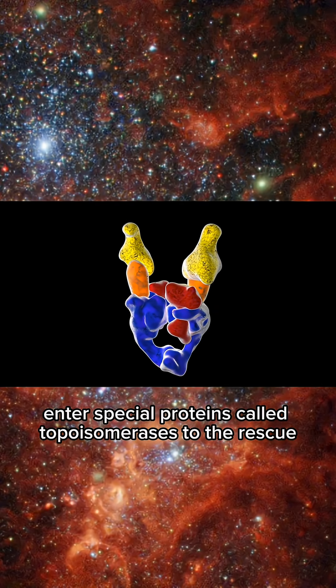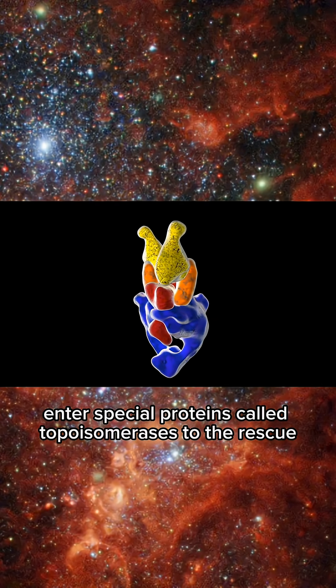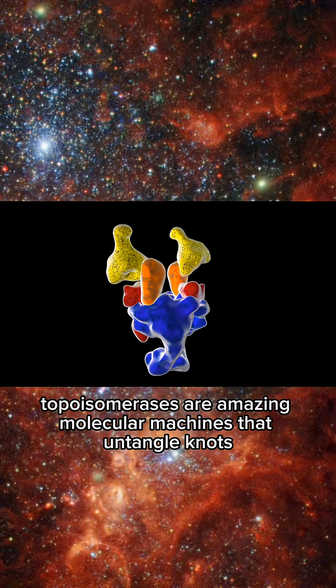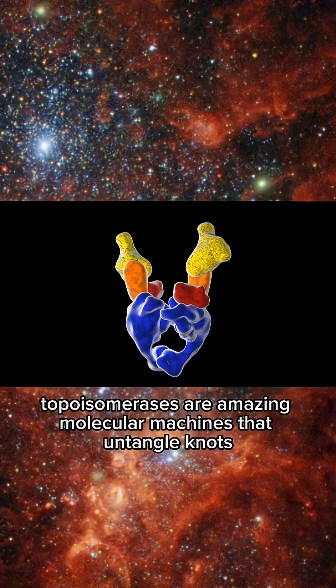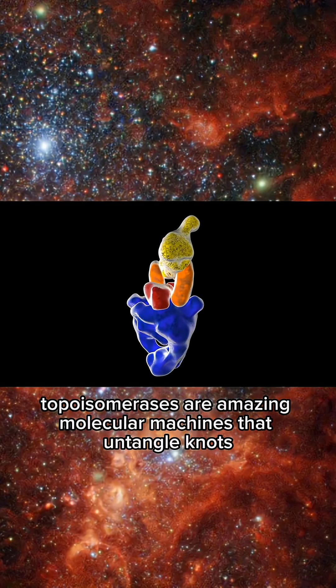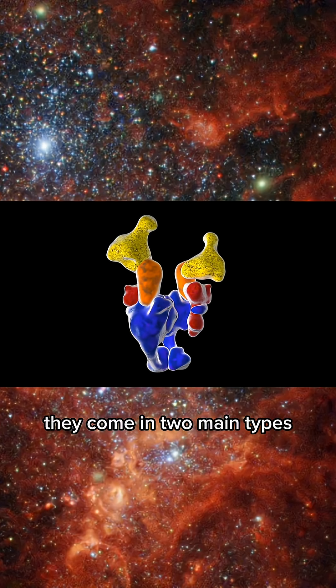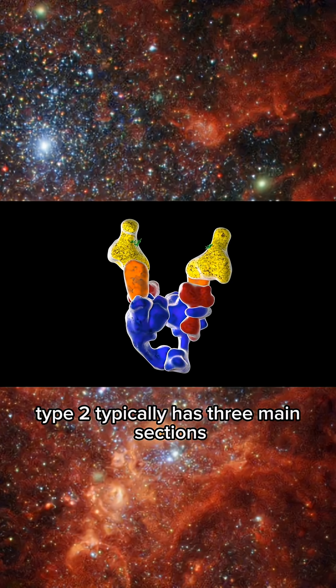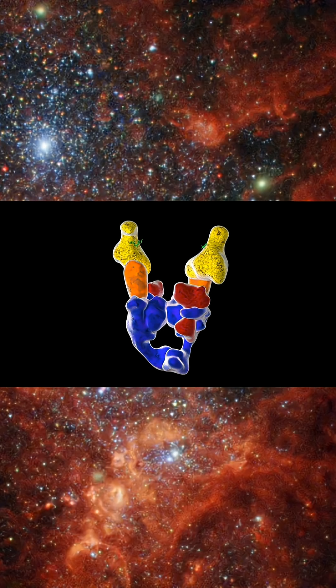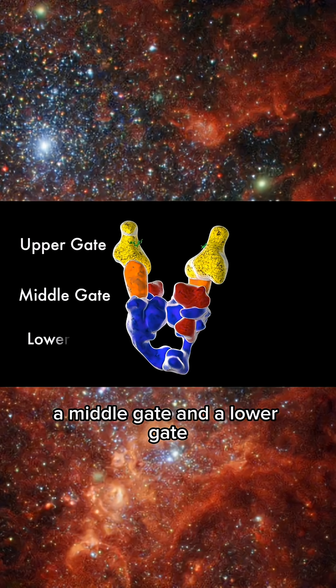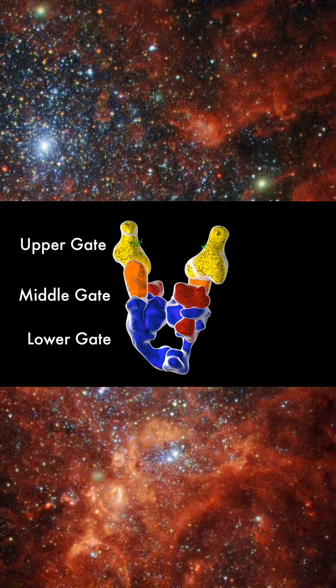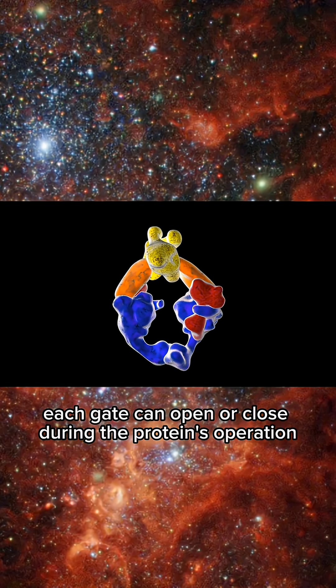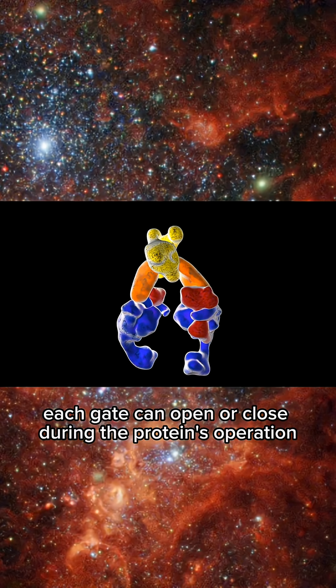Enter special proteins called topoisomerases to the rescue. Topoisomerases are amazing molecular machines that untangle knots. They come in two main types. Type 2 typically has three main sections: an upper gate, a middle gate, and a lower gate. Each gate can open or close during the protein's operation.